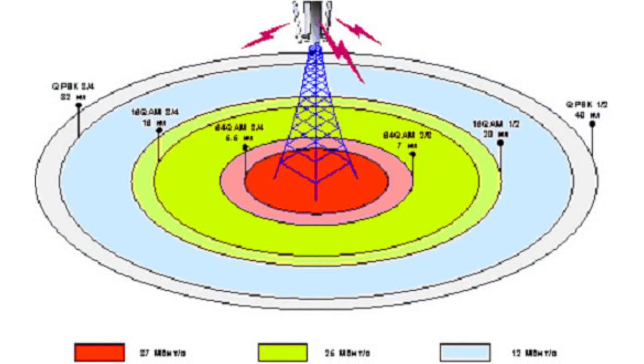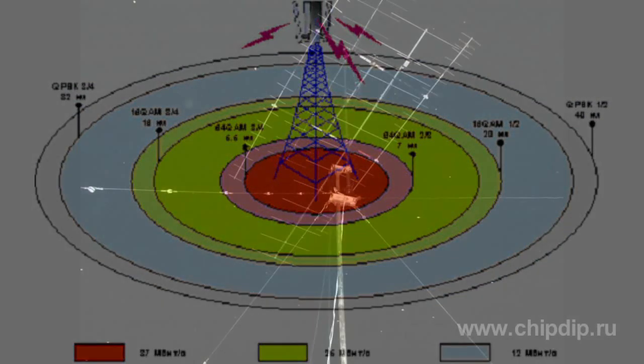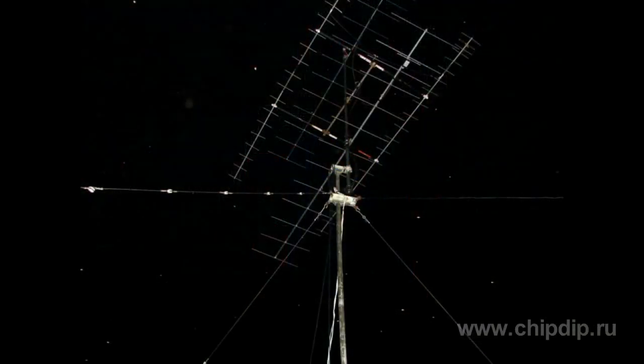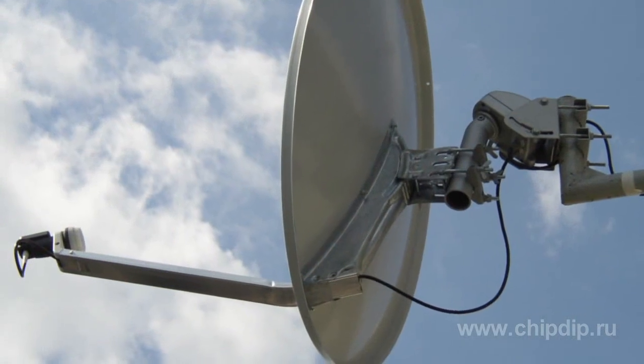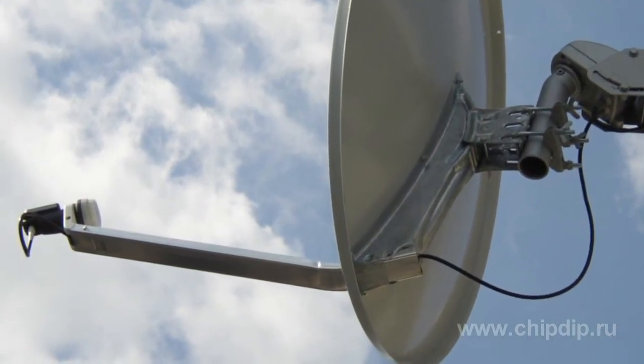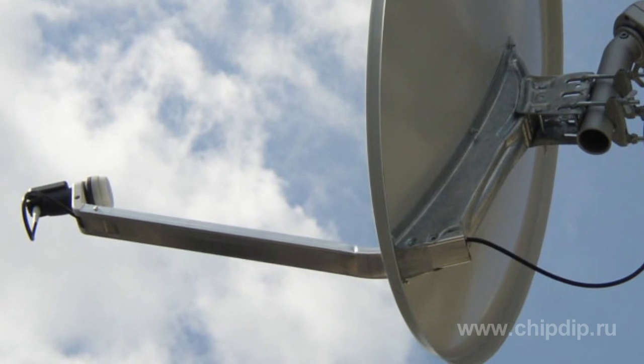Ground wave communication range depends on the receiver's operating frequency and time of the day. For instance, many people know that radio broadcasting within the medium wave range with a wavelength from 100 m to 1 km is better received at night, while the high frequency band with a wavelength from 10 to 100 m is more reliably received in the daytime.